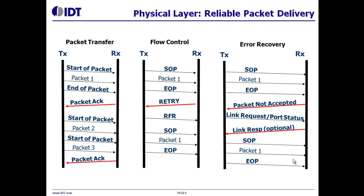A similar mechanism is used for error recovery, but instead of a retry control symbol, the receiver sends a packet not accepted control symbol indicating that a transmission error has been detected. The transmitter sends a link request control symbol requesting the acknowledgement ID of the next packet that should be sent. The link response contains that acknowledgement ID. Once that link response has been received successfully, packet transmission resumes. The error recovery can occur in 300 nanoseconds or less on RapidIO links. This is far faster than the error recovery that Ethernet with its end-to-end packet timeouts allows.